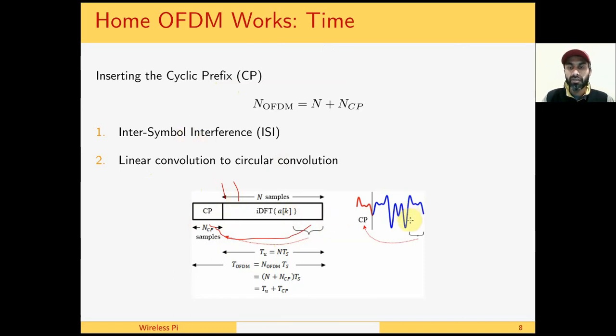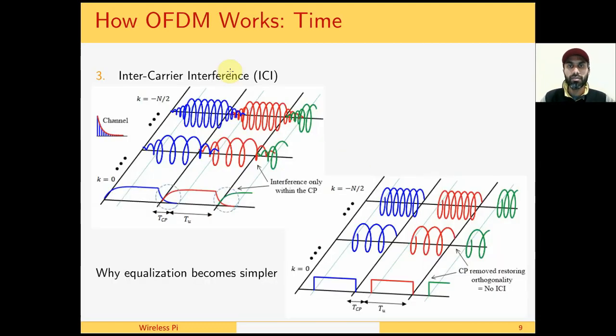Here we have a signal viewpoint where last few samples equal to the maximum expected channel length are brought back and prepended at the start of the signal. Another reason to use the cyclic prefix is to turn linear convolution of the channel into a circular convolution, the details of which we saw in lecture 9. A third reason to use the cyclic prefix is to avoid inter-carrier interference. Remember that we said these parallel waves are called subcarriers in the context of OFDM.